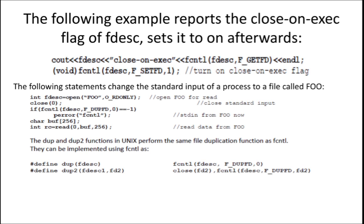The dup and dup2 functions in Unix perform the same file duplication function as FCNTL. If you want, you can use dup or dup2 to duplicate the file descriptor instead of FCNTL — that is also possible. You can see: dup(fd) or dup2(fd1, fd2). The duplicated file descriptor can be created using dup and dup2, or equivalently using FCNTL with DUPFD.